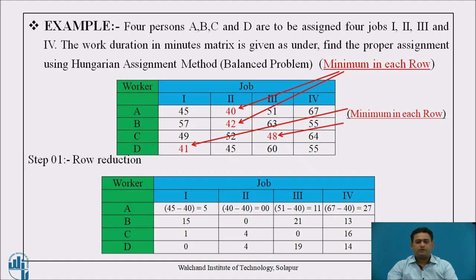This problem consists of four workers — A, B, C, D — to whom four particular jobs should be assigned. The decision-making question is: which job (job 1, 2, 3, or 4) should be assigned to each worker? Below, there is a table defining the minutes required by each worker to complete each respective job.